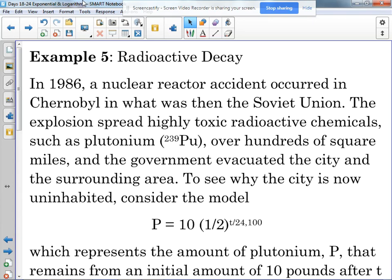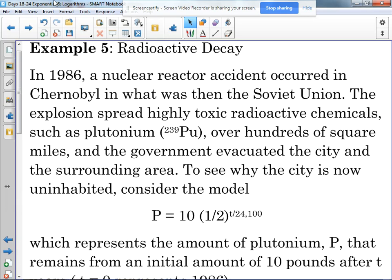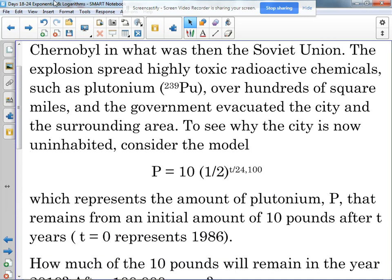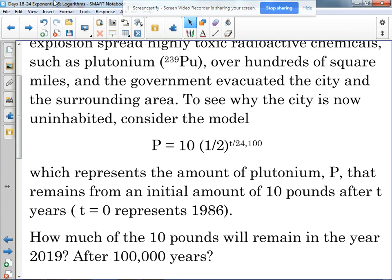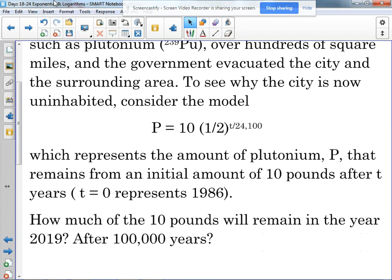And we're going to find out why it is still uninhabited. So there's the model for the radioactive decay, 10 times one-half to the T over 24,100.